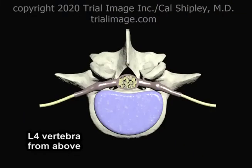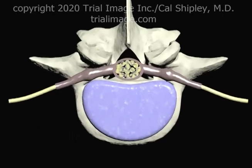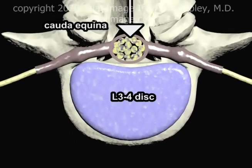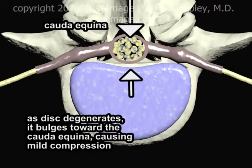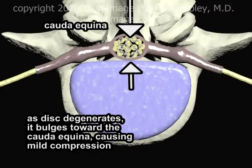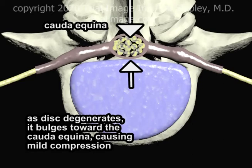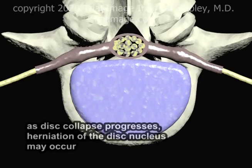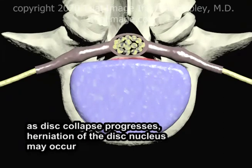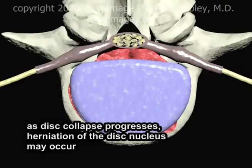Viewing the L4 vertebra from above gives us a good angle on how spinal canal compression occurs. In the early stages of disc degeneration, the disc bulges into the cauda equina, causing mild compression. As degeneration and collapse progress, the nucleus of the disc may herniate through its outer shell, resulting in moderate to severe compression of the cauda equina.